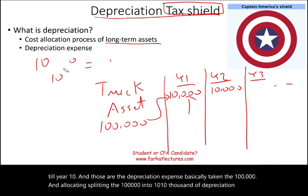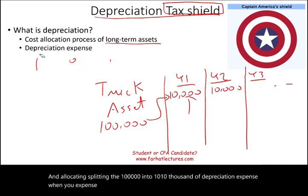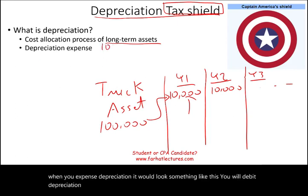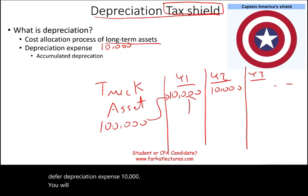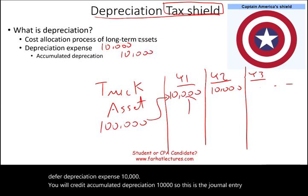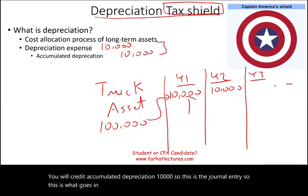When you record depreciation, the journal entry looks like this: you debit depreciation expense $10,000 and credit accumulated depreciation $10,000. This is what goes into the accounting record.